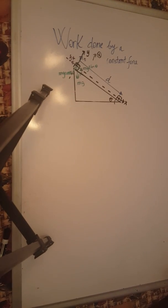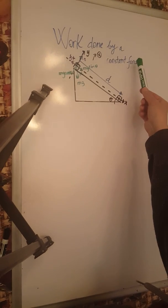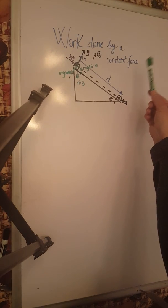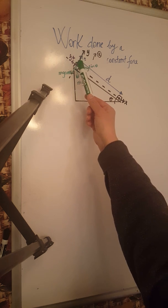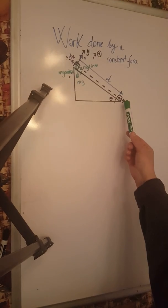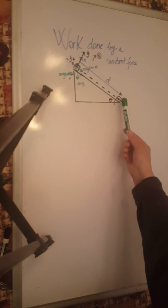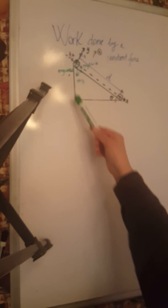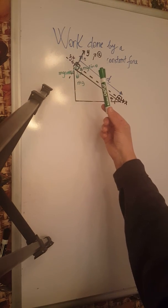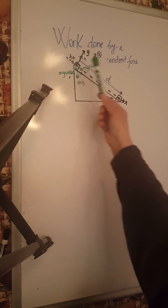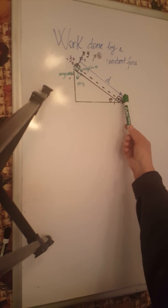This video is number 2 showing how to calculate the work done by a constant force. This time the object is moving along a rough inclined plane, from the top of the ramp to the bottom. The inclined plane has an inclination of theta. The displacement is from the top to the bottom of the ramp, labeled b in blue.